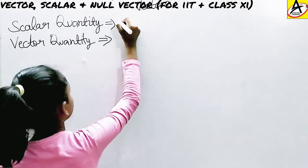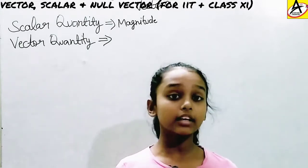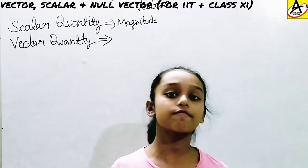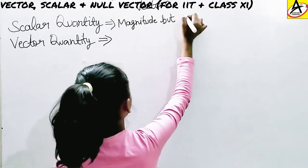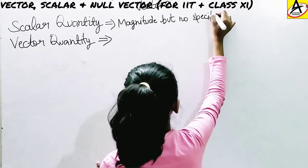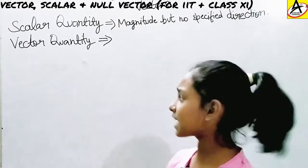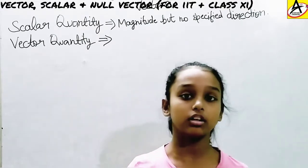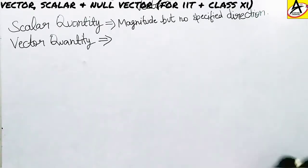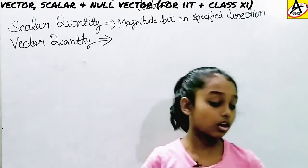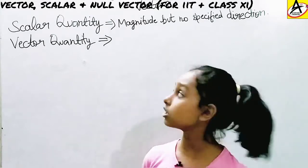Scalar quantity has magnitude but no direction. A scalar quantity has only magnitude but no specified direction. For example, time equals 10 seconds. In this example we are getting only magnitude but no specified direction, so this example is a scalar quantity.